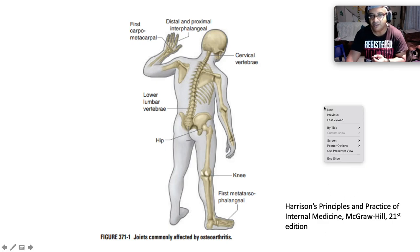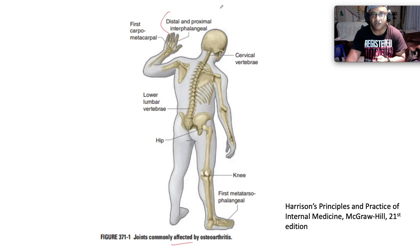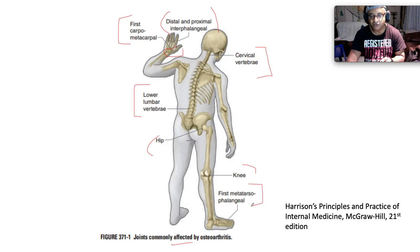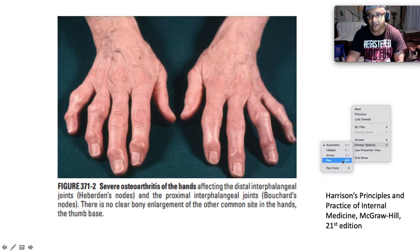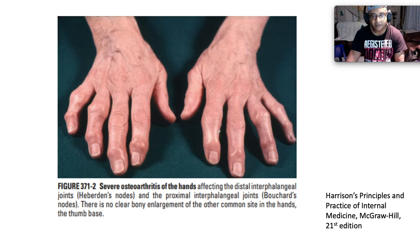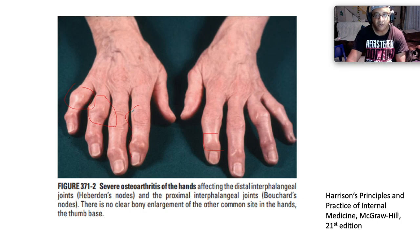This diagram from Harrison's illustrates the joints commonly affected by osteoarthritis: the distal and proximal interphalangeal joints with Bouchard's and Heberden's nodes respectively, the first carpometacarpal joint causing squaring of the thumb, the cervical and lower lumbar vertebrae, the hips, the knees, and the first metatarsophalangeal joint. A clinical photograph illustrates severe OA affecting the hands with visible DIP and PIP involvement and squaring of the thumb.